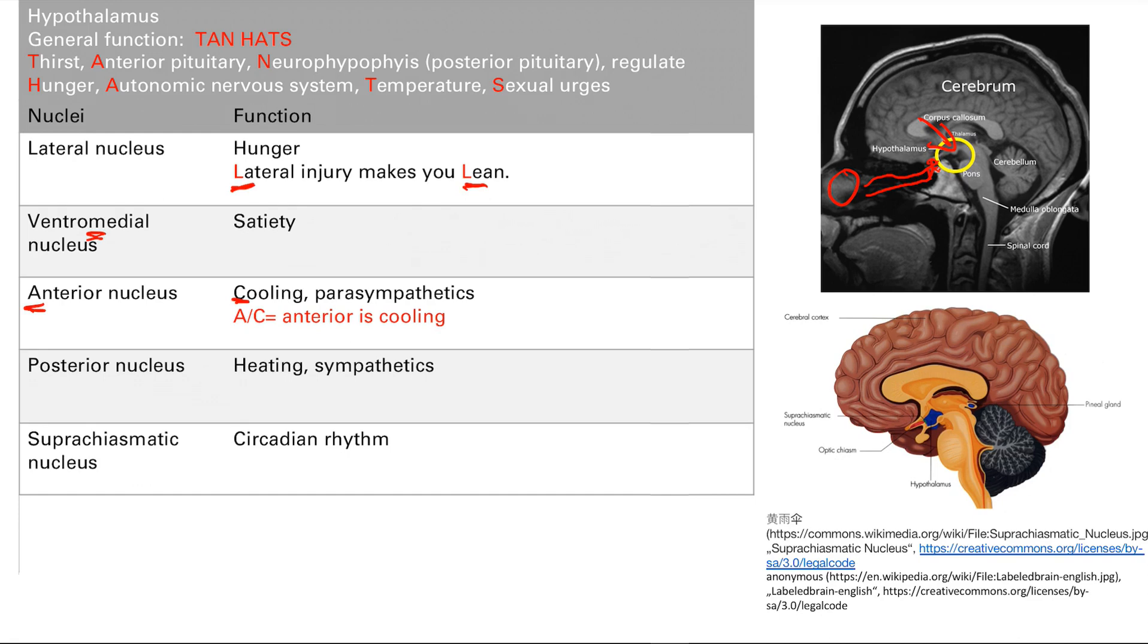This is the last one for sure. This is the preoptic nucleus. It's thermal regulation, sexual behavior regulation, release of GNRH.